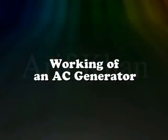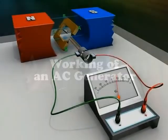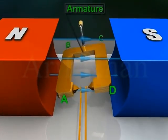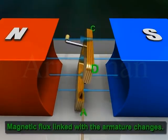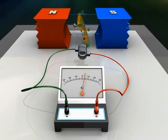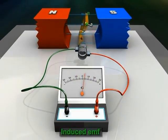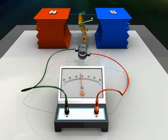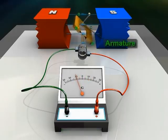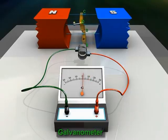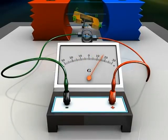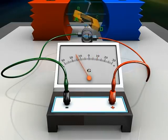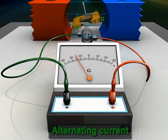Working of an AC generator: when the armature rotates between the poles of the field magnet, the magnetic flux linked with the armature changes continuously. As a result, an EMF is induced in the armature, which in turn produces an electric current through the armature, the galvanometer, the slip rings, and the brushes. The galvanometer needle swings between negative and positive values, meaning an alternating current is flowing.